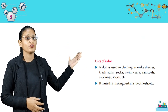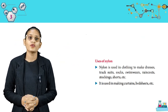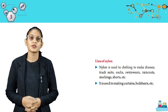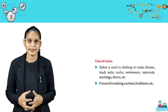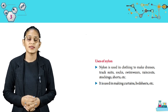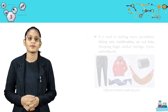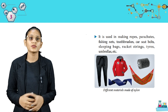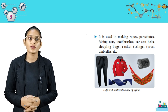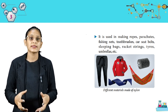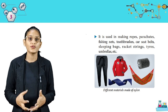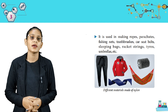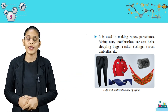Uses of nylon: nylon is used in clothing to make dresses, track suits, socks, swimwear, raincoats, stockings, shorts, etc. It is used in making curtains and bedsheets. It is also used in making ropes, parachutes, fishing nets, toothbrushes, car seat belts, sleeping bags, racket strings, tires, umbrellas, etc. Look at the pictures — different materials made of nylon.